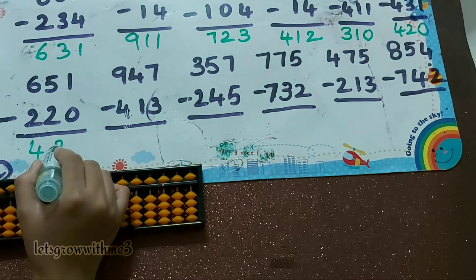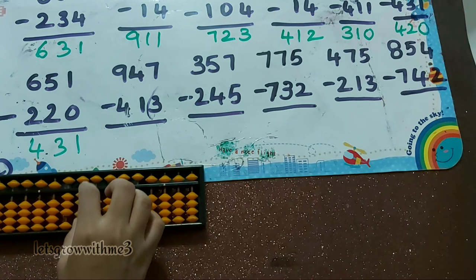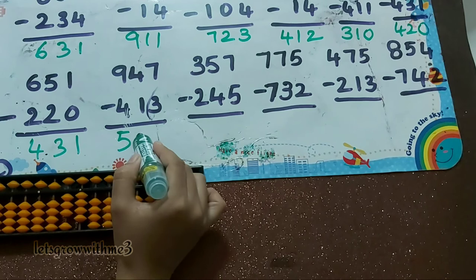Next one, 947 minus 413: minus 4, minus 1, minus 3. Minus 5 plus 2. So the answer is 534.